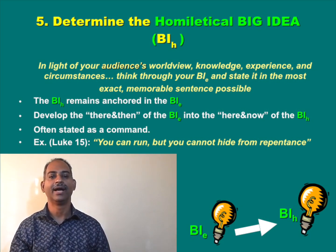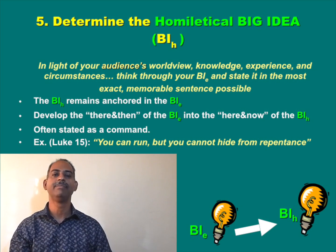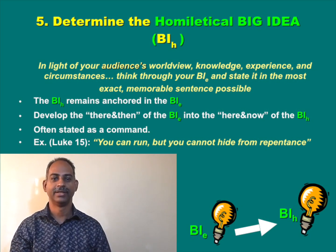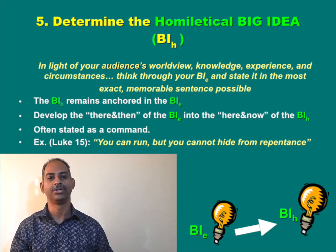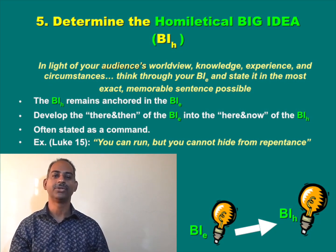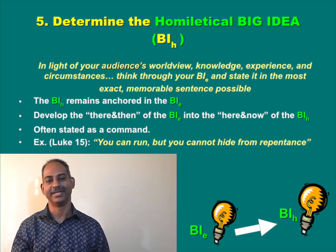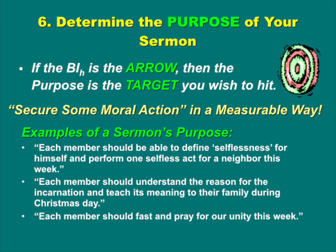The homiletical big idea is often stated as a command. For example, in Luke 15 — the parable of the lost coin, lost sheep, or lost son — the homiletical big idea might be: you can run but you cannot hide from repentance. The next step is to determine the purpose of your sermon. If the homiletical big idea is the arrow, then the purpose is the target you wish to hit. That means securing some moral action in a measurable way from the audience.